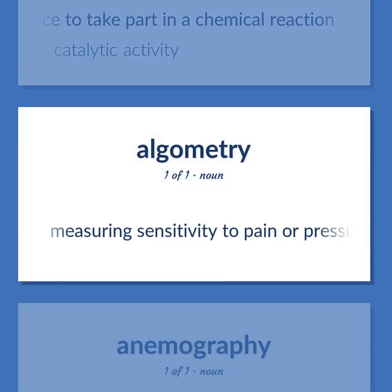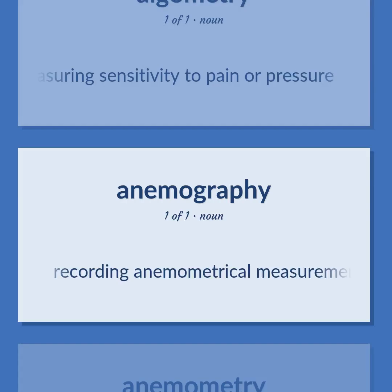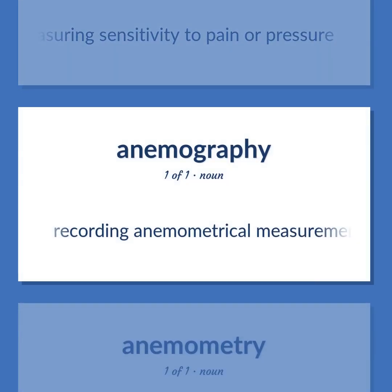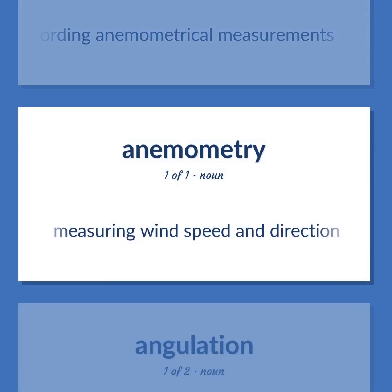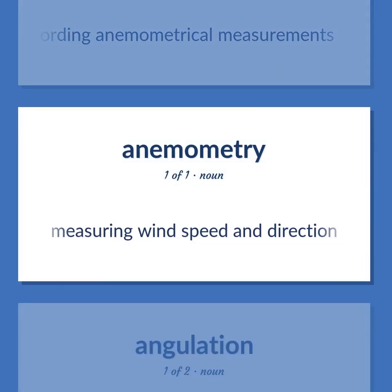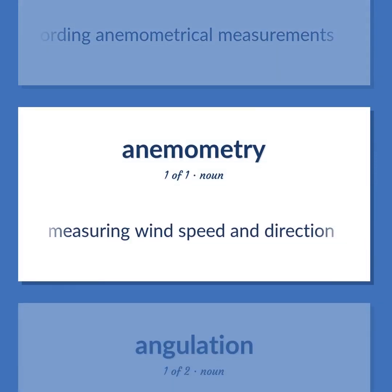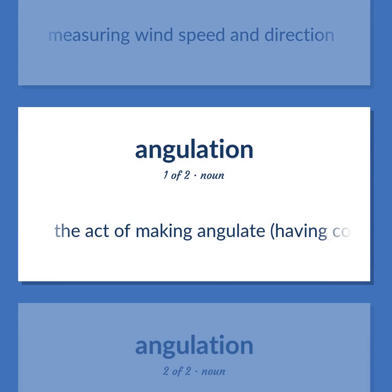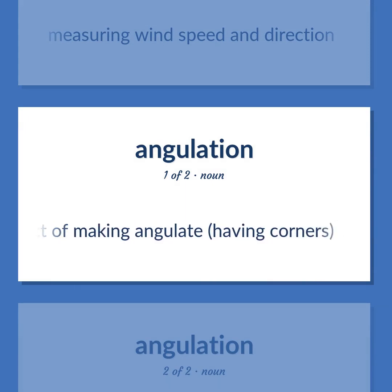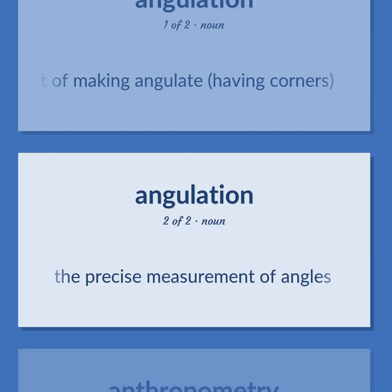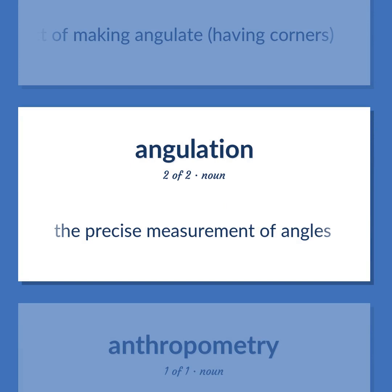Algometry: measuring sensitivity to pain or pressure. Anemometrical measurements: recording anemometrical measurements — measuring wind speed and direction. Angulation: the act of making angulate, having corners. Anglometry: the precise measurement of angles.